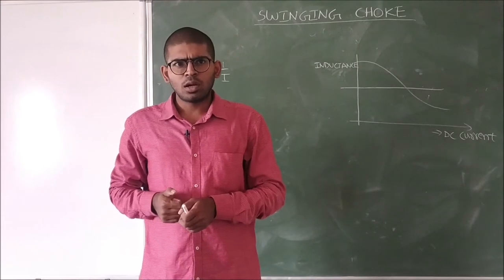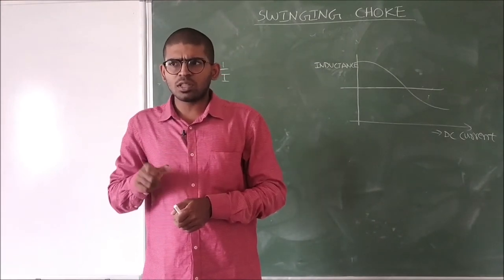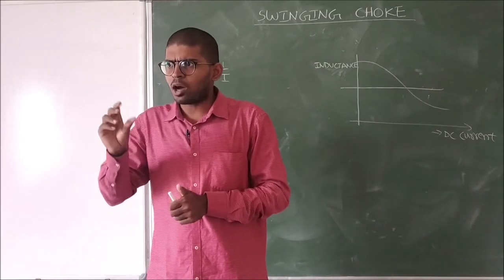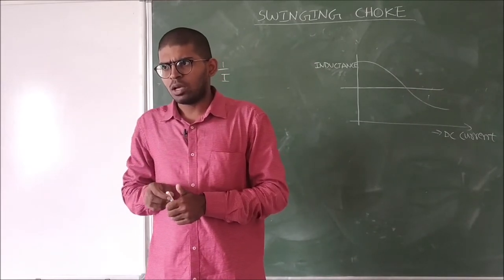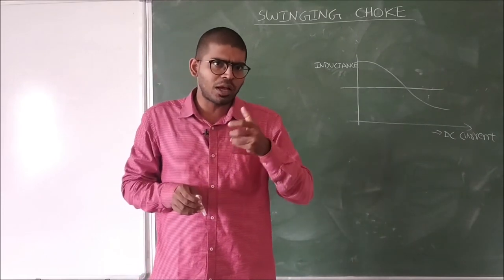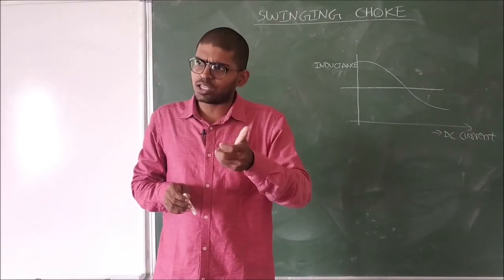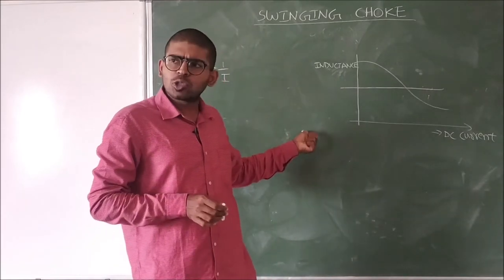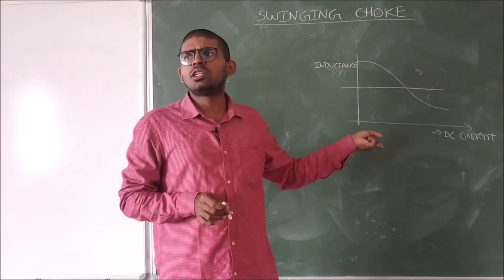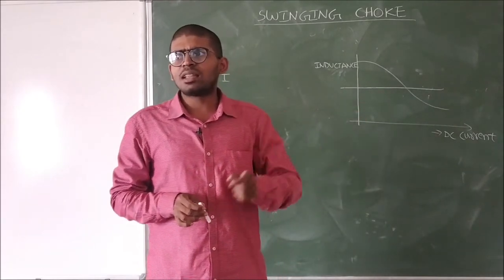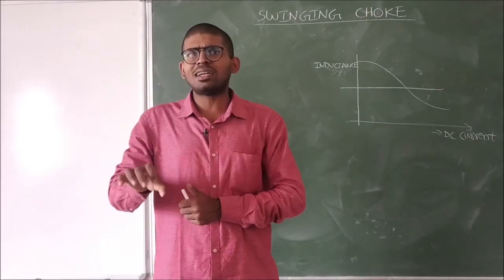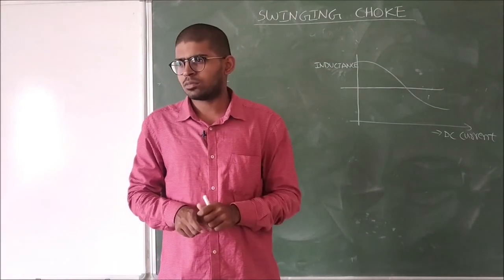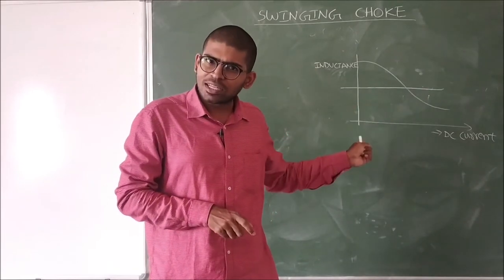Whenever we get the supply to the homes, we will get the voltage with some harmonics. Whenever we give that to a load, then we will observe some harmonic current. So if we use the swinging choke in place of the normal choke, the line harmonic current reduction is observed with very good superior quality.